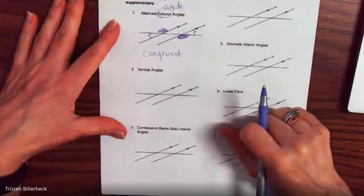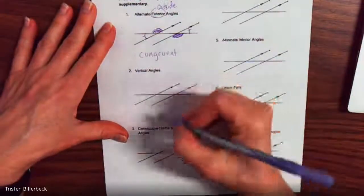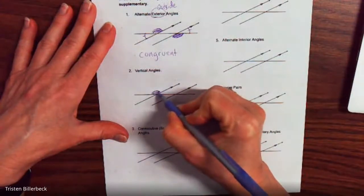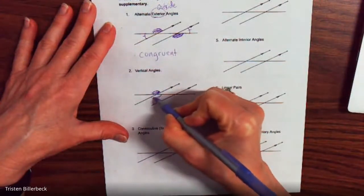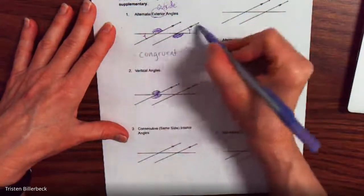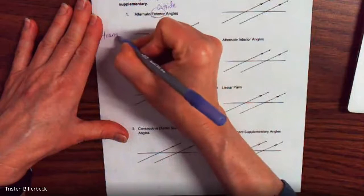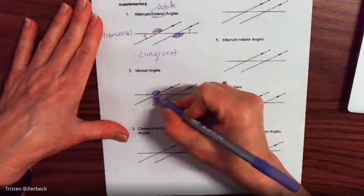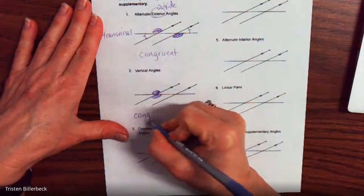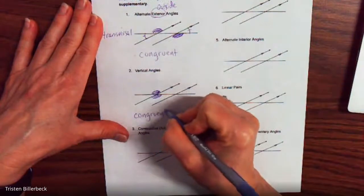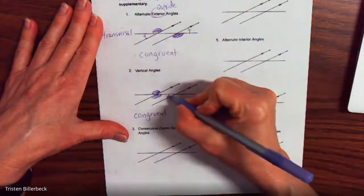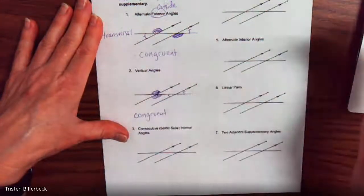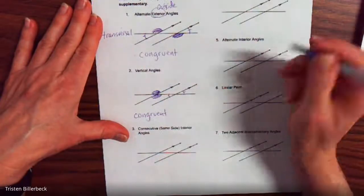Now let's talk about vertical angles. There's so many of them. This is a vertical angle here — you don't need parallel lines and a transversal. When you have vertical angles, you just need intersecting lines. So these are congruent. There are a lot of vertical angle pairs here — these would be vertical angles, these would be vertical angles, these would be vertical angles.